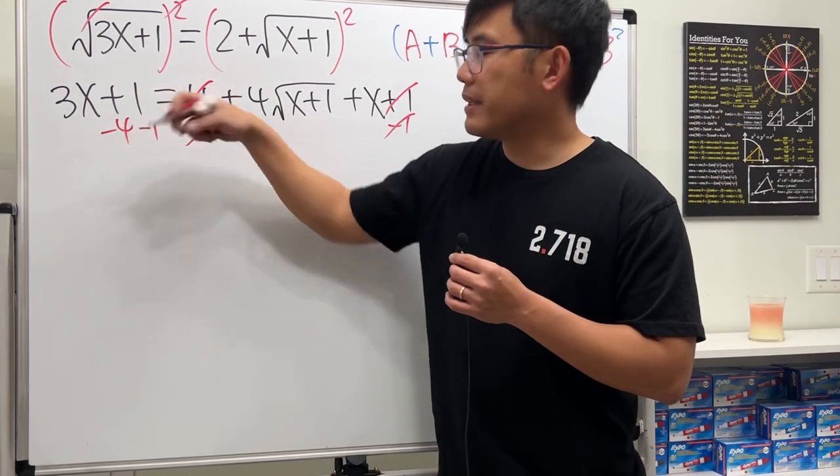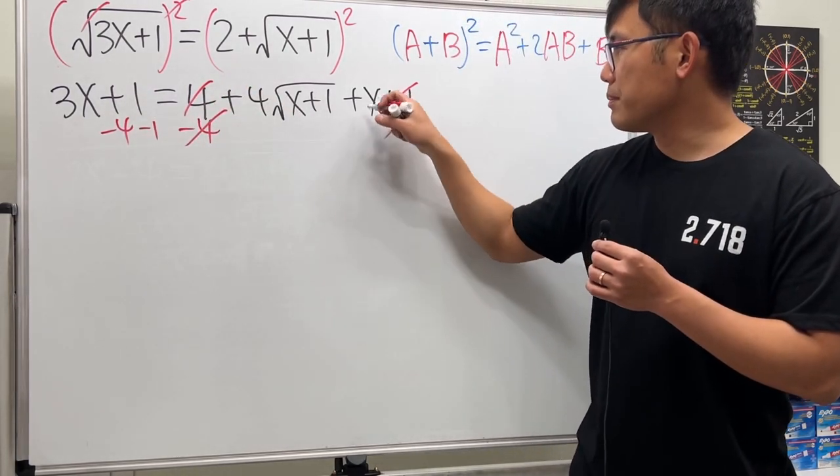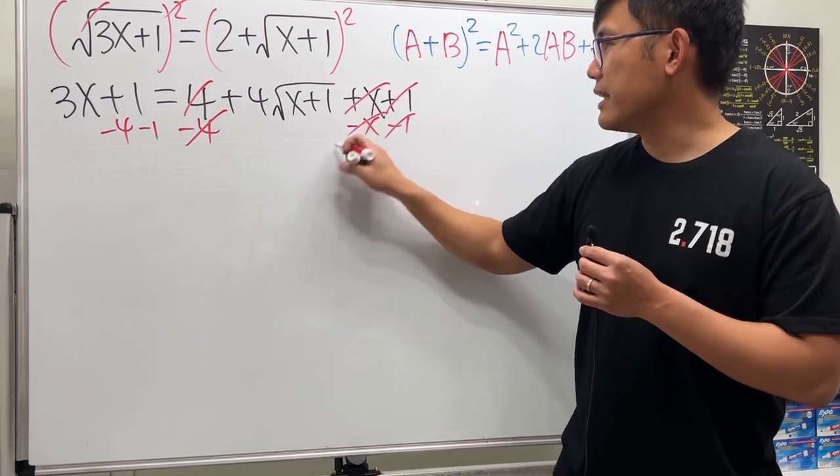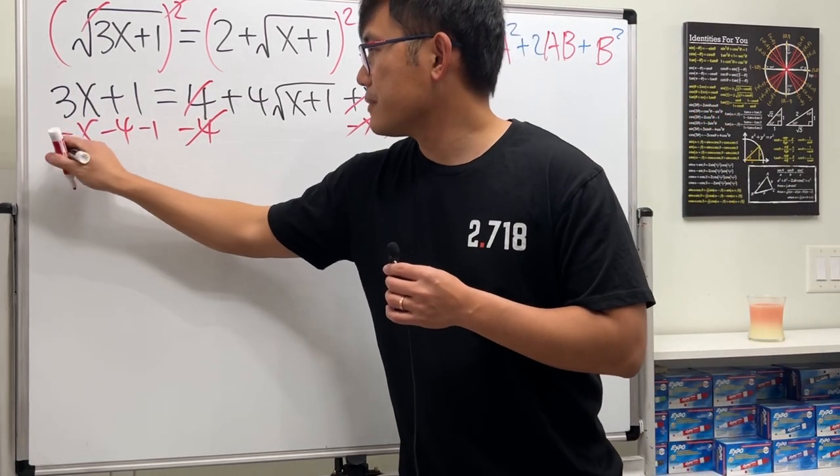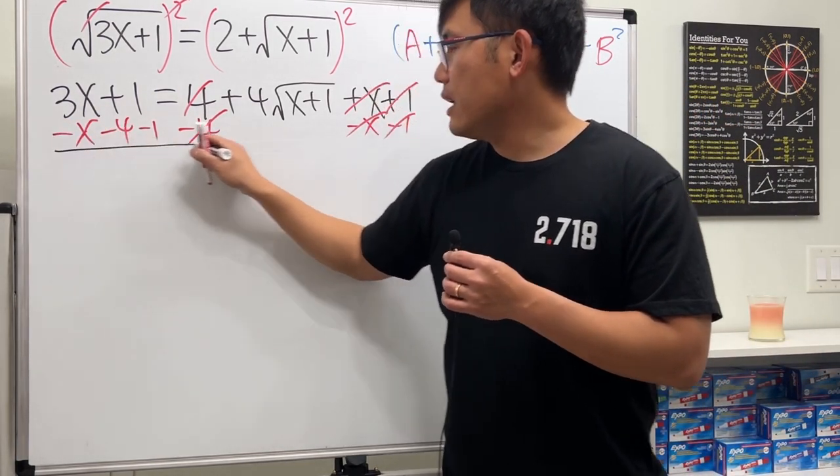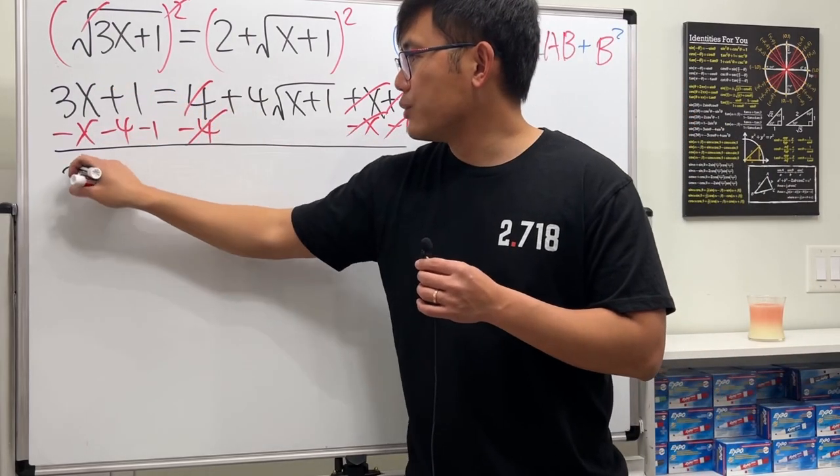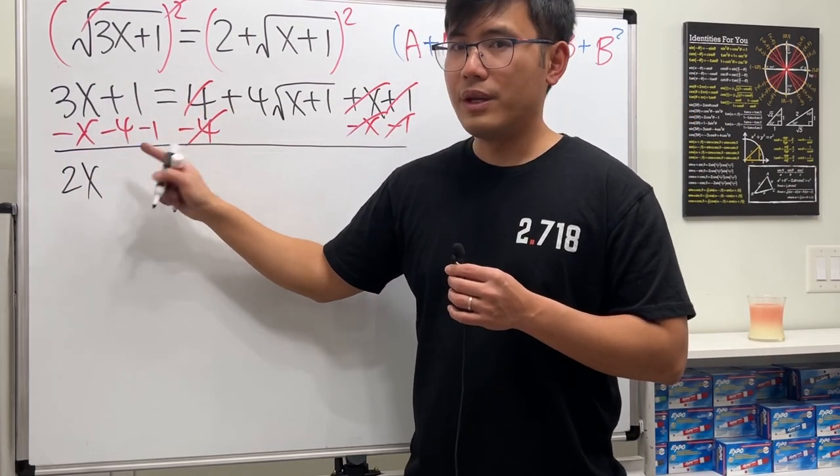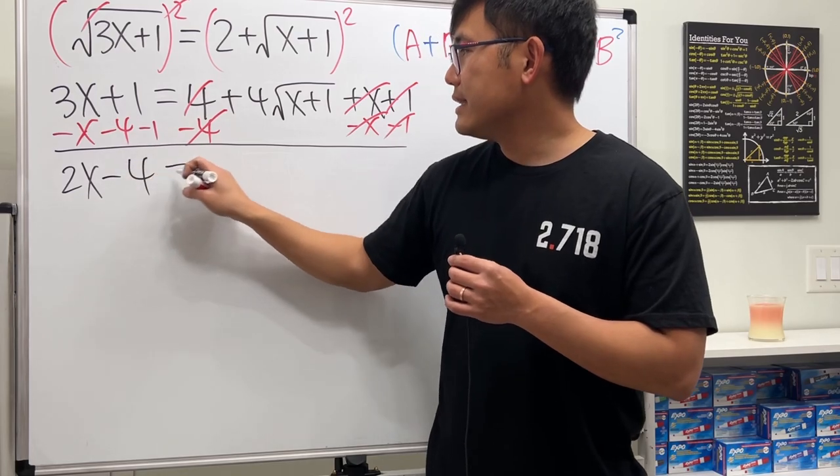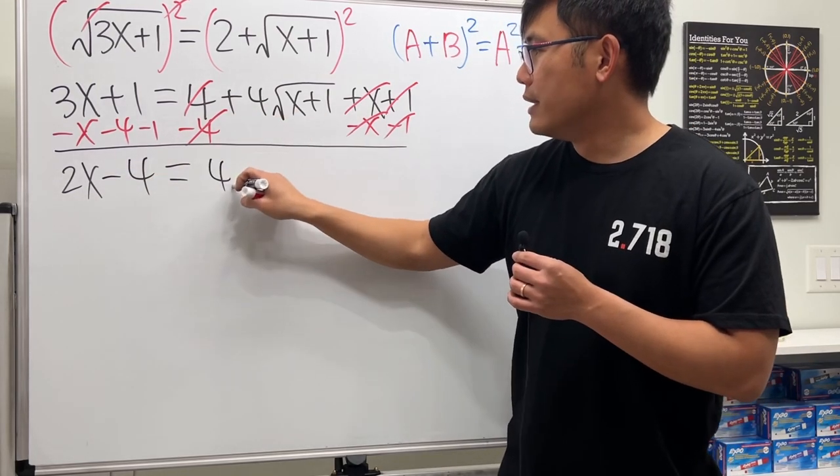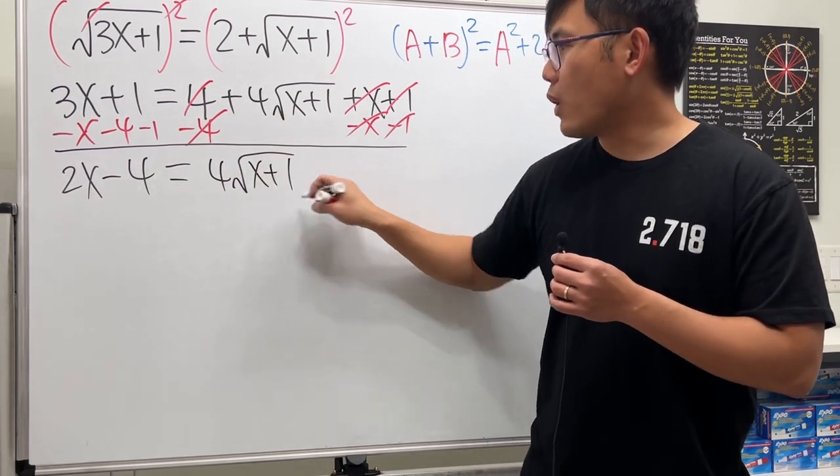Okay, so we'll combine the numbers here. But this is a plus x, so that's minus x. So this and that will cancel, minus x here. And now we will have this and that is 2x. And 1 minus 4 minus 1 is minus 4. And that's equal to this, which is 4 square root of x plus 1.